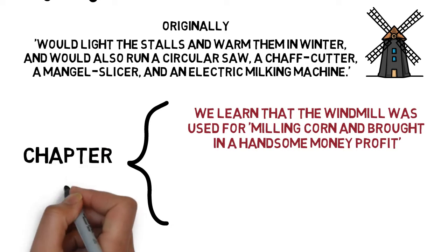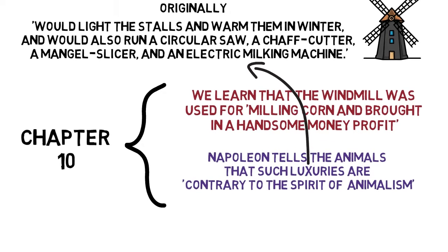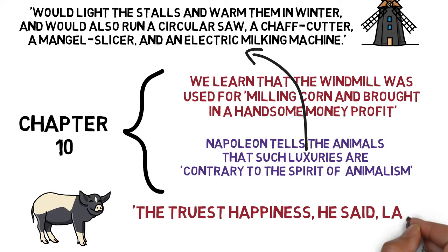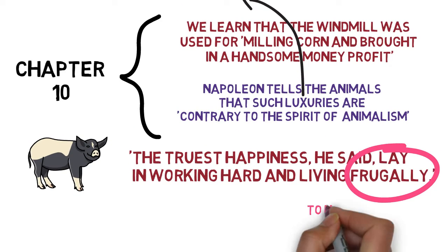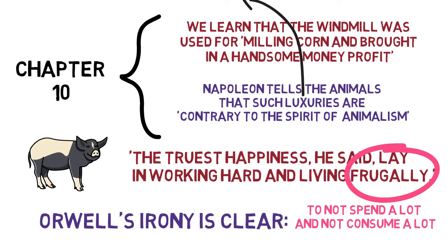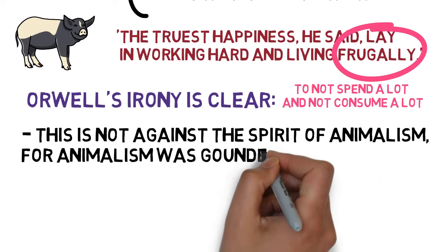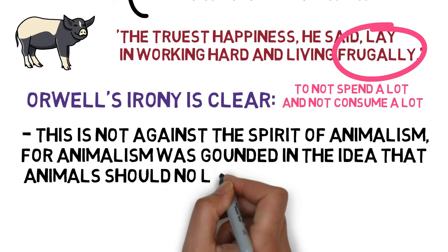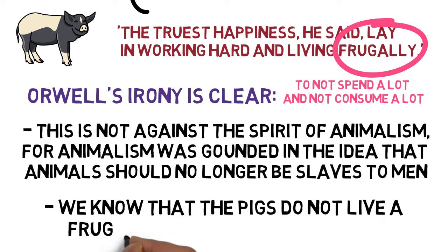Napoleon tells the animals that such luxuries are contrary to the spirit of animalism. The truest happiness, he said, lay in working hard and living frugally. To be frugal means not to spend or consume a lot. Napoleon is telling them they should work hard and live simply in order to be happy. Orwell's irony is clear here. This is not against the spirit of animalism — animalism was grounded in the idea that animals should no longer be slaves to men. And we know that the pigs do not live a frugal life themselves; quite the opposite.